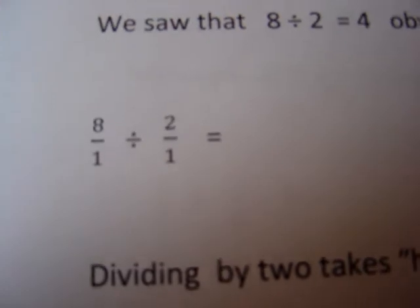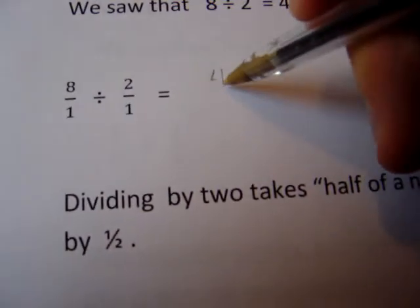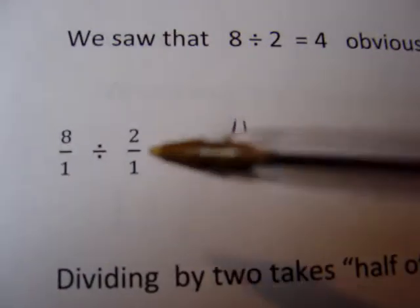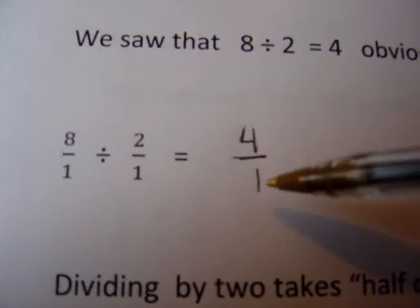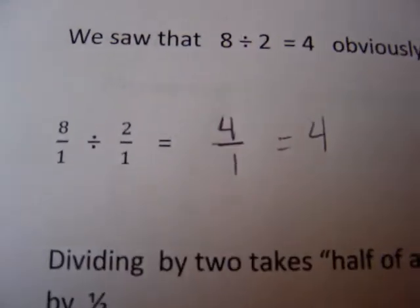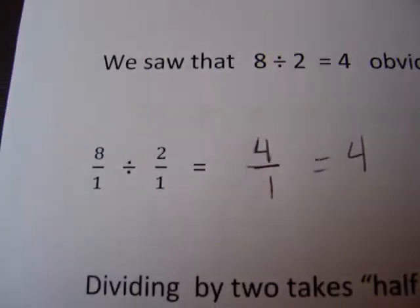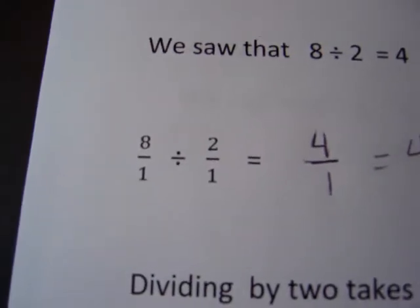I can divide straight across: 8 divided by 2 is 4, and on the denominators 1 divided by 1 is 1. So now we have 4, and our pieces are 1 wholes, so 4 divided by 1 is still 4. It's the same thing we just got, but now we're using fraction style instead of whole numbers.